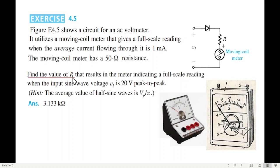Find the value of R that results in the meter indicating a full-scale reading when the input sine wave voltage is Vi 20 volts peak to peak. So when input voltage is 20 volts peak to peak, the meter shows a full-scale reading. The value of the resistance is to be found.